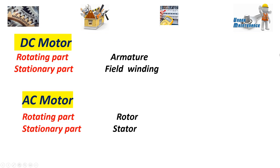And this is the comparison of DC motor and AC motor. For DC motor, rotating part armature and stationary part field windings. And for AC motor, rotating part rotor and the stationary part stator.